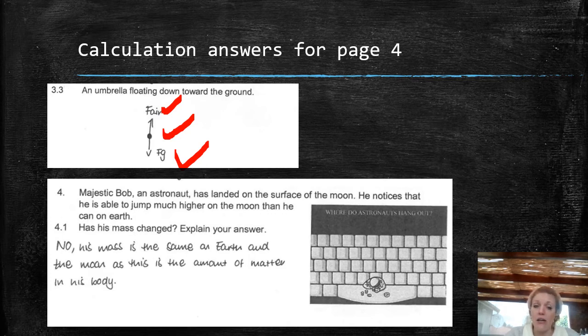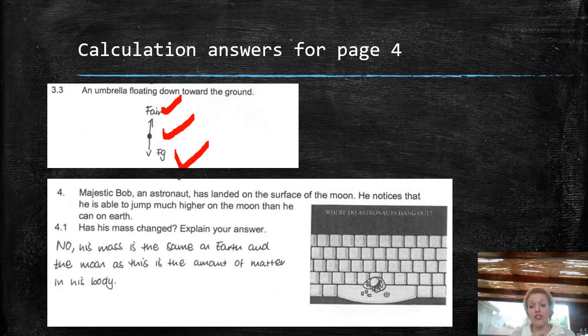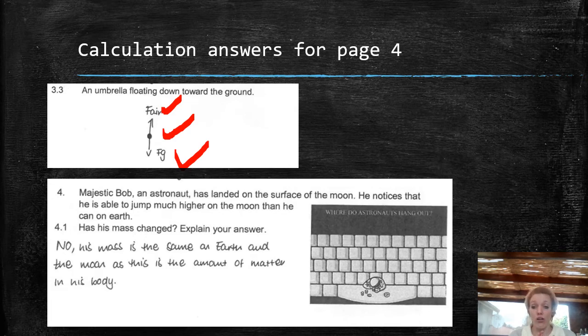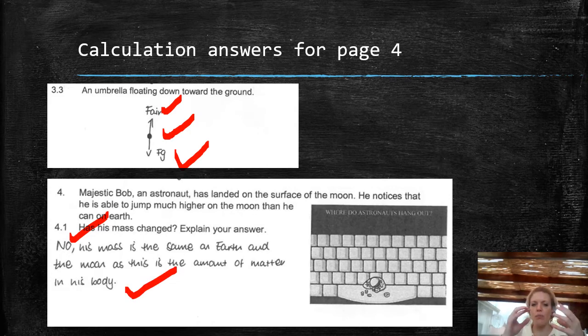Then question four. Majestic Bob is an astronaut which has landed on the surface of the moon. He notices that he is able to jump much higher on the moon than he can on earth. Here, this question, you guys should have looked it up. Has his mass changed? Explain your answer. In this question, his mass has not changed at all. We didn't mention any change in mass. He's still the same mass. His mass is the same as it is on earth, because mass is the amount of matter in his body. So for a question like this, you're going to get a mark for saying no. Then you're going to get a mark for your explanation. So please fill these in. Make sure that you've marked everything and then we'll carry on to the next section.